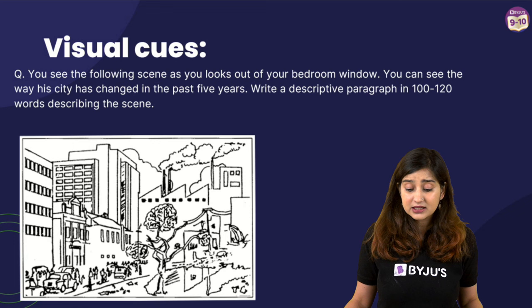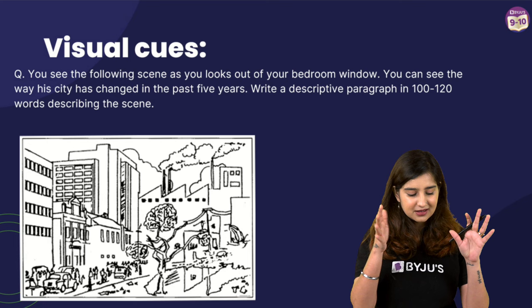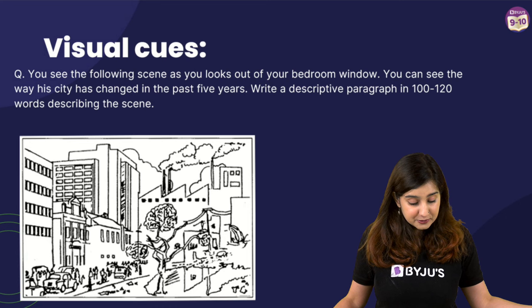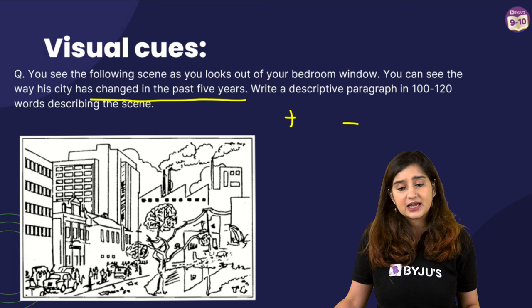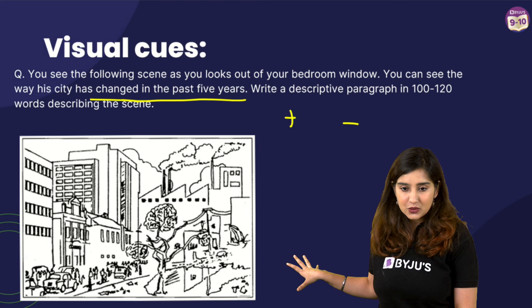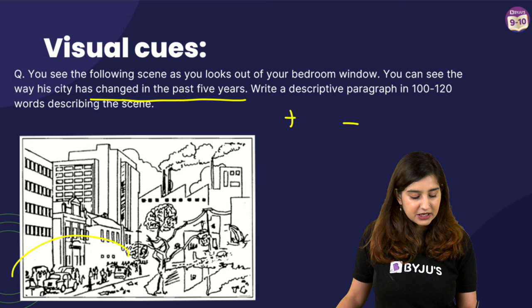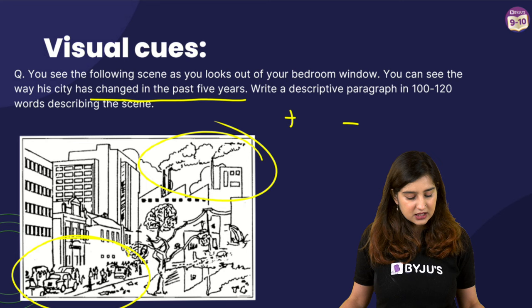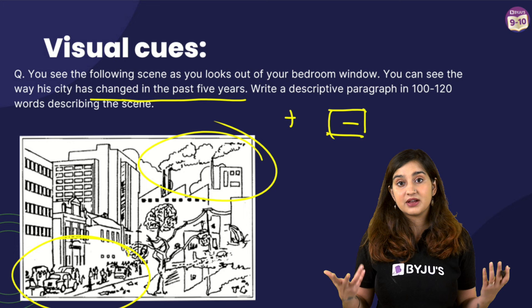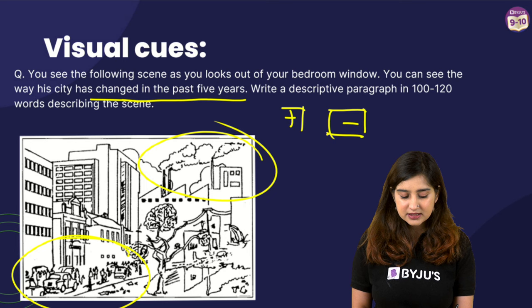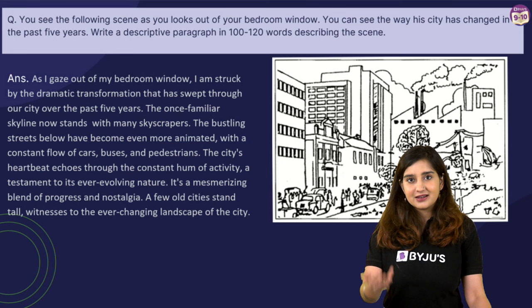Now let's look at our third type of question — a visual cue. The image shows the view from your bedroom window and how the city has changed in the past five years. Now, is this change positive or negative? That's entirely up to you and what you interpret from the image. You could see pollution from factories and conclude the change is for the worse — a negative approach. Or you could focus on development, bustling streets, and many people — a positive approach. Let's take a look at an example paragraph and figure out from the writing itself whether a positive or negative approach has been taken.